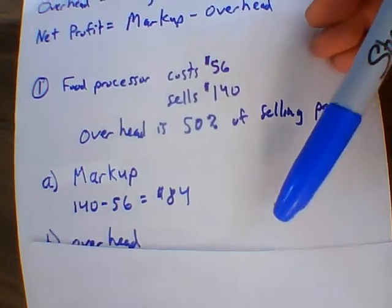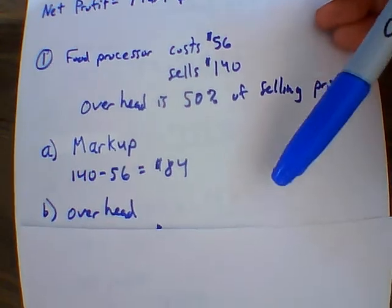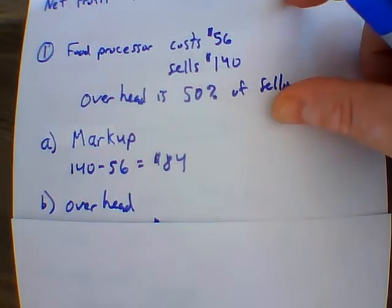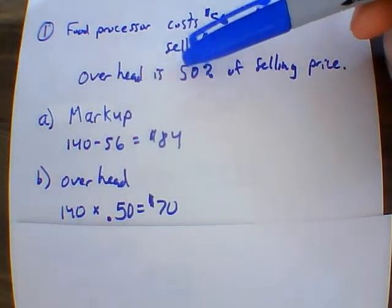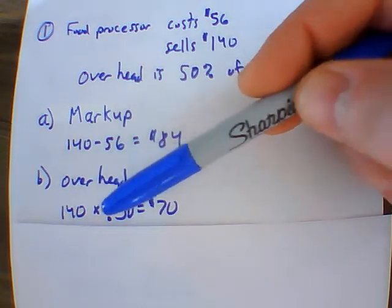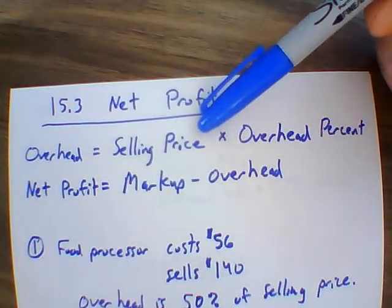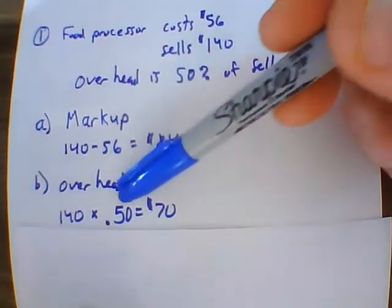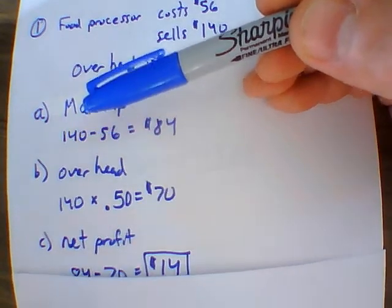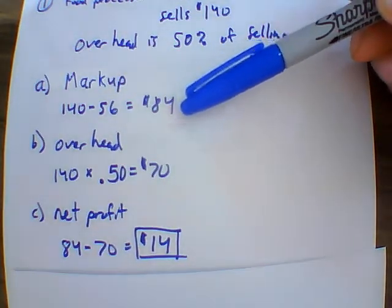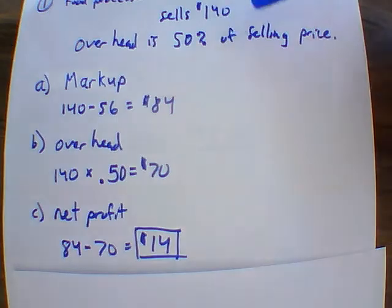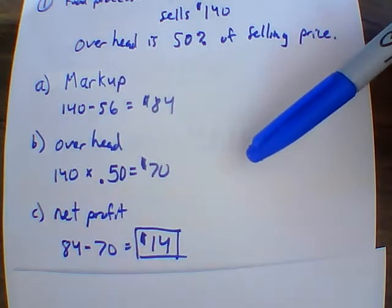Now for the overhead — those expenses tied to the overall business, not just the product. Overhead is fifty percent of the selling price, so $140 × 0.50 = $70. Our net profit is then markup minus overhead: $84 − $70 = $14. So on each food processor sold, the net profit is only fourteen dollars.